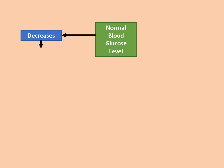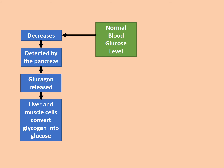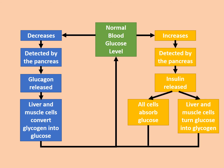If blood glucose level decreases, that is again detected by the pancreas, but this time it produces glucagon. Glucagon travels in the blood to liver and muscle cells, causing them to break down stored glycogen into glucose. That increases blood glucose level, returning it to normal, which switches off glucagon production — another example of negative feedback. The two hormones work together to maintain blood glucose around a fixed point.